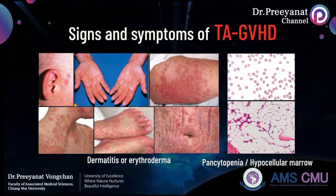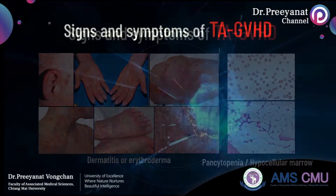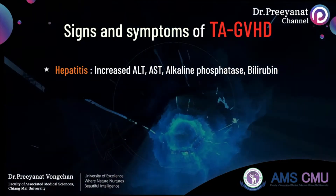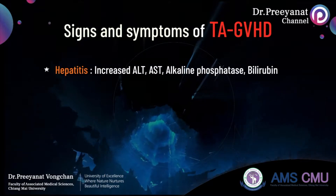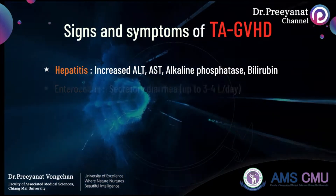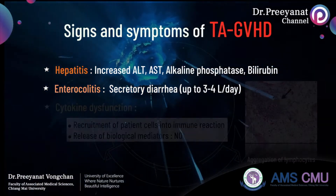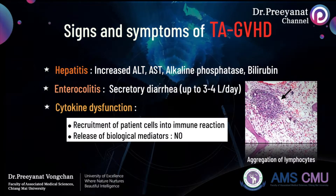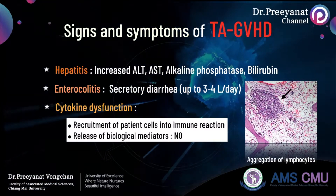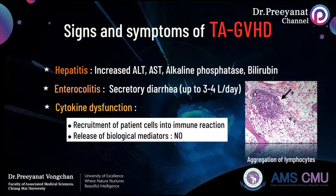Pancytopenia with a hypocellular marrow and reduction in marrow elements. Hepatitis presenting as an increase in liver enzymes, including alanine aminotransferase, aspartate aminotransferase, alkaline phosphatase, and bilirubin. Enterocolitis with up to 3 to 4 liters per day of secretory diarrhea. Cytokine dysfunction, as observed in the recruitment of patient cells into the immune reaction and release of biological mediators, particularly nitric oxide. All events play a role in the pathogenesis of TA-GVHD.